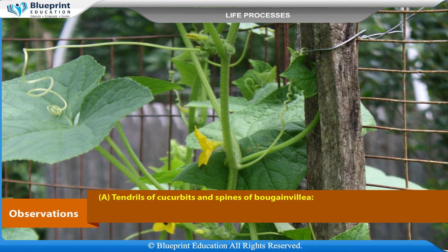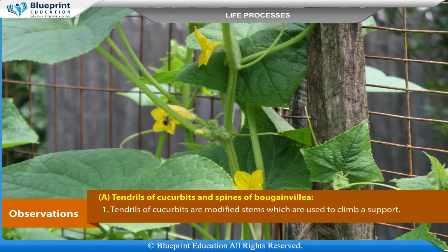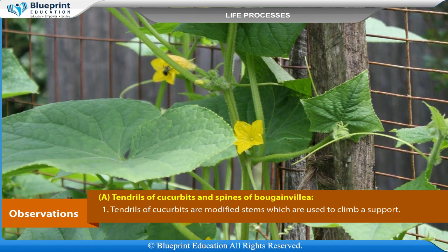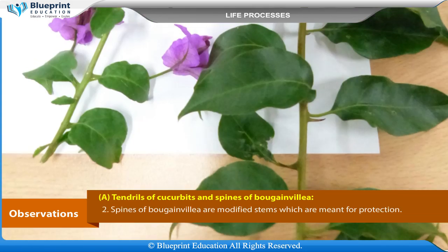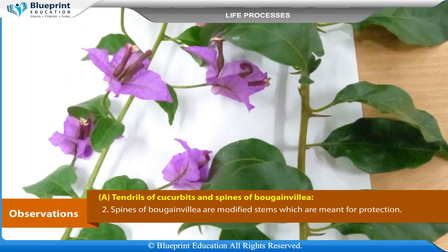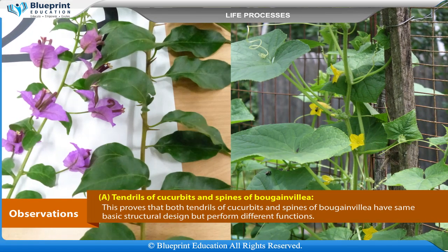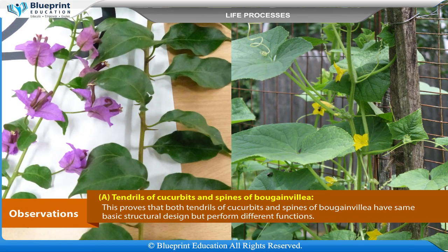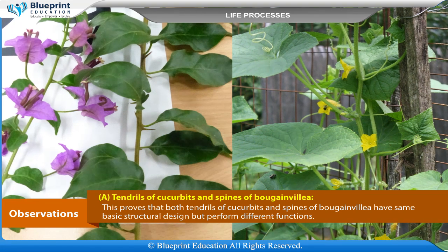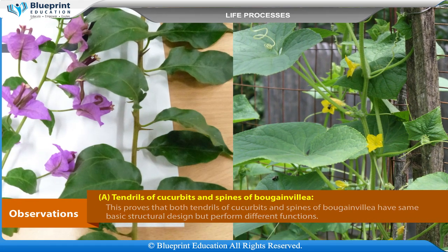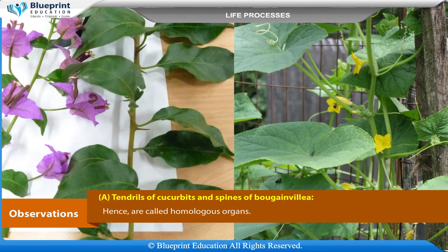Observation A: Tendrils of cucurbits and spines of bougainvillea. Tendrils of cucurbits are modified stems used to climb a support. Spines of bougainvillea are modified stems meant for protection. Both tendrils of cucurbits and spines of bougainvillea have the same basic structural design but perform different functions, hence they are called homologous organs.